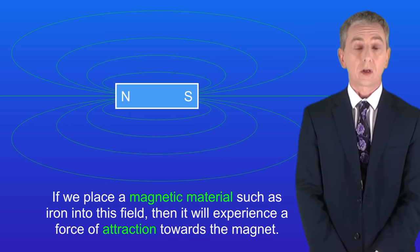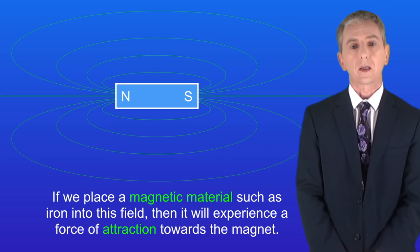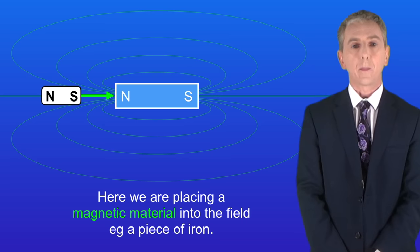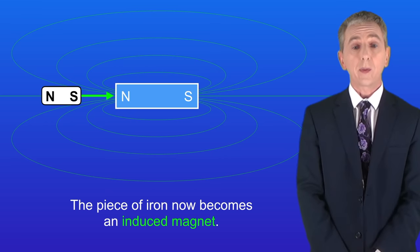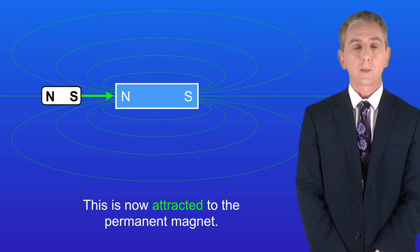If we place a magnetic material such as iron into this field then it will experience a force of attraction towards the magnet. So here we're placing a magnetic material into the field, for example a piece of iron. As you can see the piece of iron now becomes an induced magnet. This is now attracted to the permanent magnet.